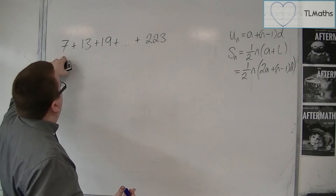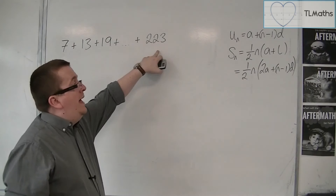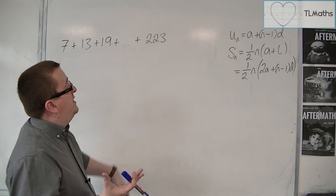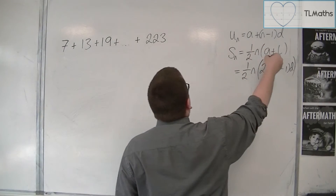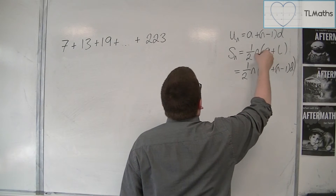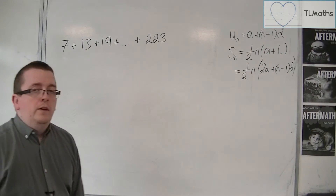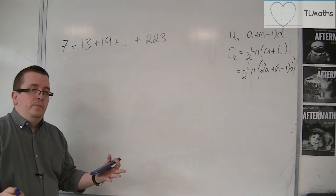I know that a is 7, I know that l, the last term, is 223, so I'm going to be able to use that formula, but only if I know what n is. So I need to work that out.